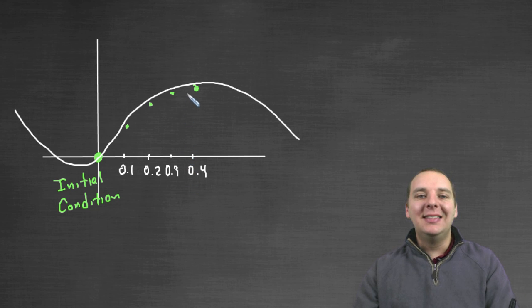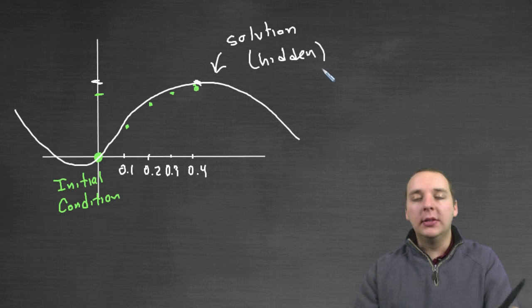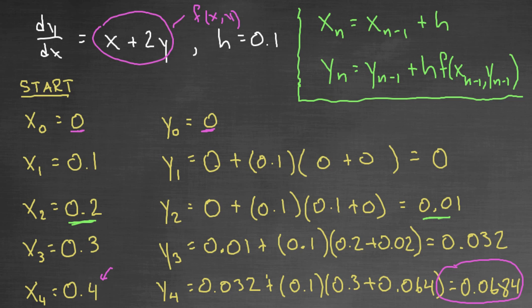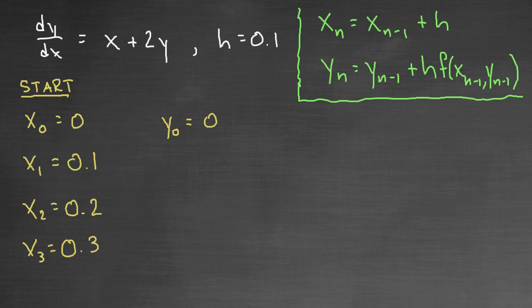What Euler's method does is it approximates what the y value would actually be on the solution curve. The white line is representing the actual solution to the differential equation. But we're going to pretend this is hidden. Do you see how close the green points get to the white line? That's the idea behind Euler's method - these x, y points follow the solution curve. We would say that the last y coordinate we found approximated the exact y value at 0.4, even though ours was only an approximation.